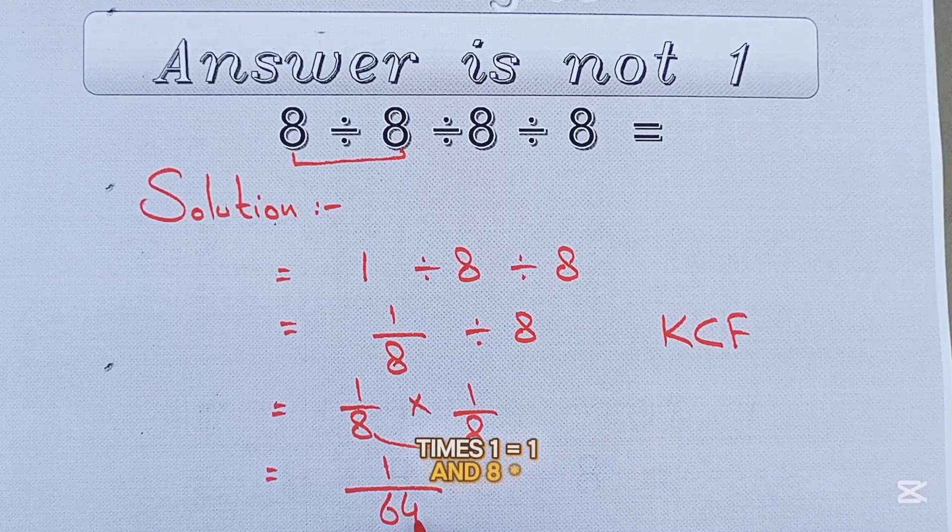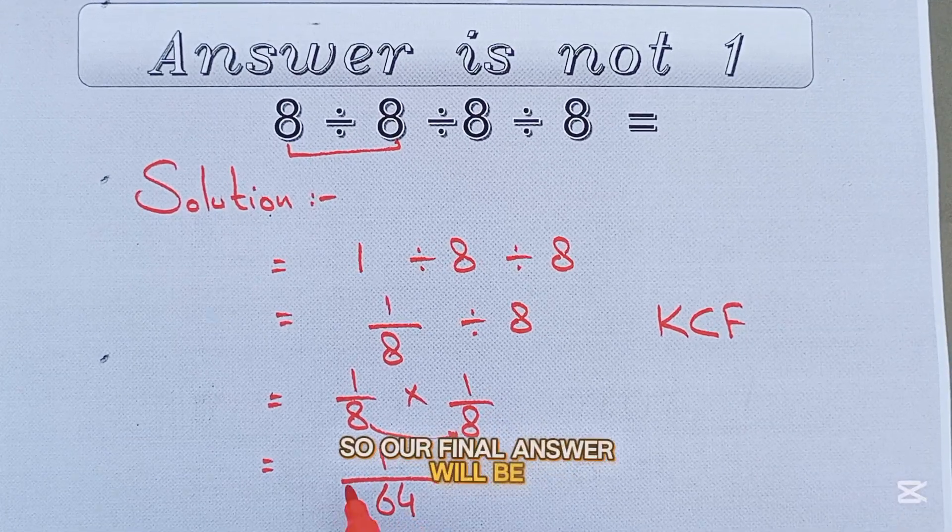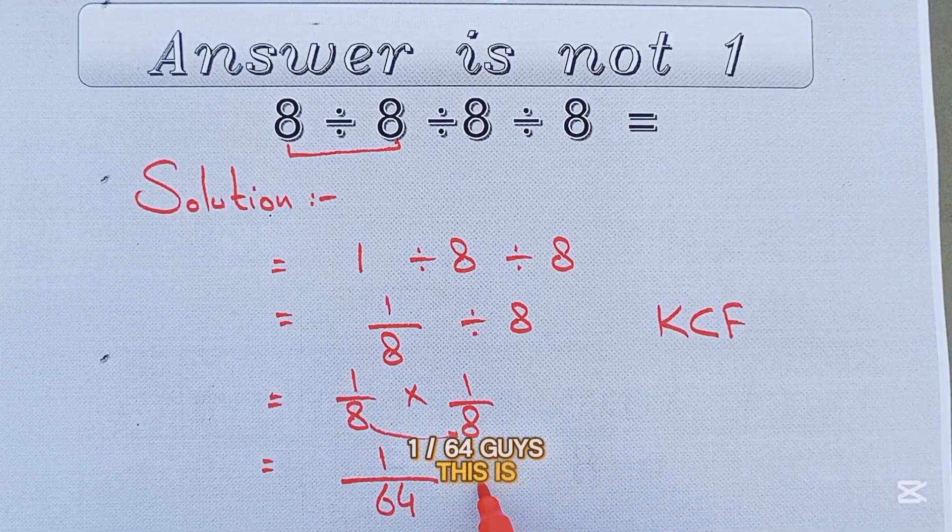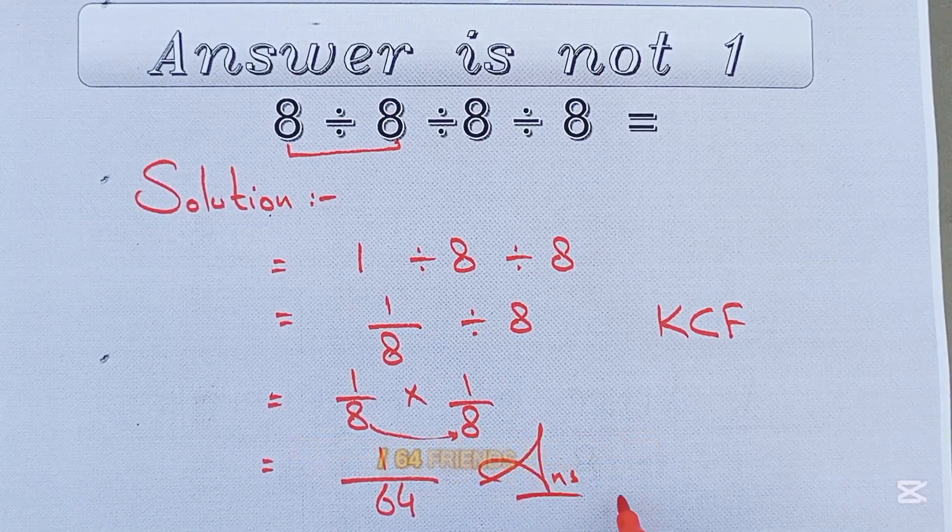Now 1 times 1 equals 1 and 8 times 8 equal to 64. So our final answer will be 1 divided by 64. Guys, this is our correct answer for the above stated math puzzle, 1 divided by 64.